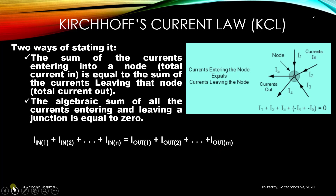It can be written as I_in1 plus I_in2 plus I_inN equals I_out1 plus I_out2 plus I_outM. This explains how Kirchhoff's Current Law works.